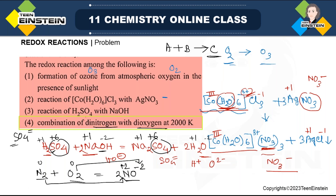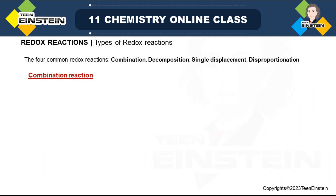Now we will start different types of redox reactions. Note that not every combination reaction is necessarily a redox reaction — some combination reactions may not be redox. The four common types of redox reactions are: combination, decomposition, single displacement, and disproportionation. Disproportionation is always a redox reaction, but combination and decomposition may not always be.